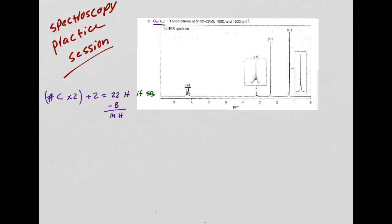So I've already got a lot of information just by looking at the formula. Then they give you the IR absorption peaks and the proton NMR. Let's go over the proton NMR and see what we can get out of it. The first thing I'm going to look at is a peak at 7.2 ppm. This is great - you know that every time you have a peak around 7 ppm, that means you have a benzene ring. And that's good because we kind of expected that just based on the formula.